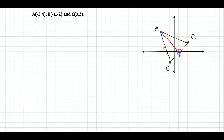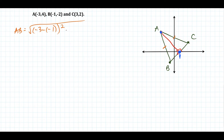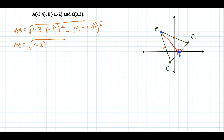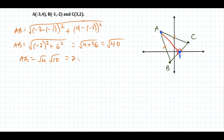Looking at the picture, we notice that AB and AC are the two sides that should be equal in length. So another way of establishing that the triangle is isosceles is to find the length of both sides and show the lengths are the same. Using the distance formula to find the length of segment AB: we take the square root of the difference of x-coordinates squared plus the difference of y-coordinates squared. That's negative 3 minus negative 1, squared, plus 4 minus negative 2, squared. This gives negative 2 squared plus 6 squared, which is 4 plus 36, giving square root of 40, or 2 square root 10.